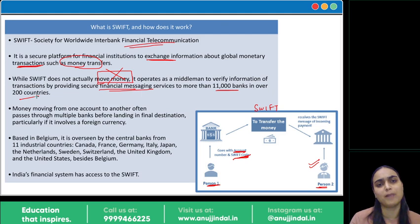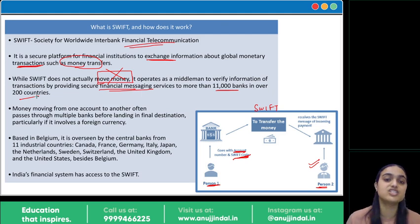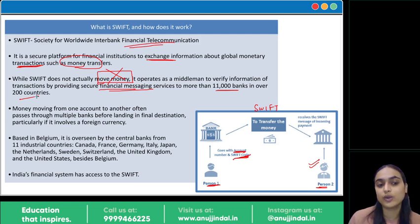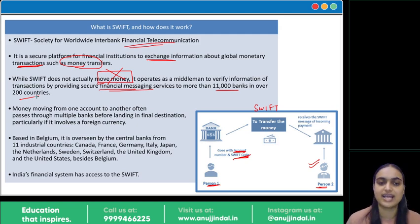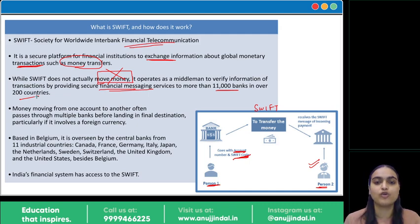SWIFT is overseen by central banks of various countries and is headquartered in Belgium. Countries like Canada, France, Germany, Italy, Japan, Netherlands, Switzerland, Sweden, UK, and the US all oversee it. That is why the US and European Union are able to exclude certain Russian banks from using SWIFT. India also has access to this SWIFT mechanism.